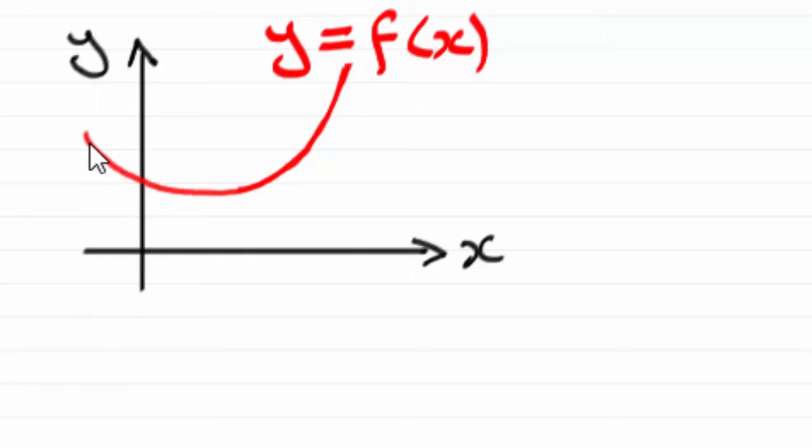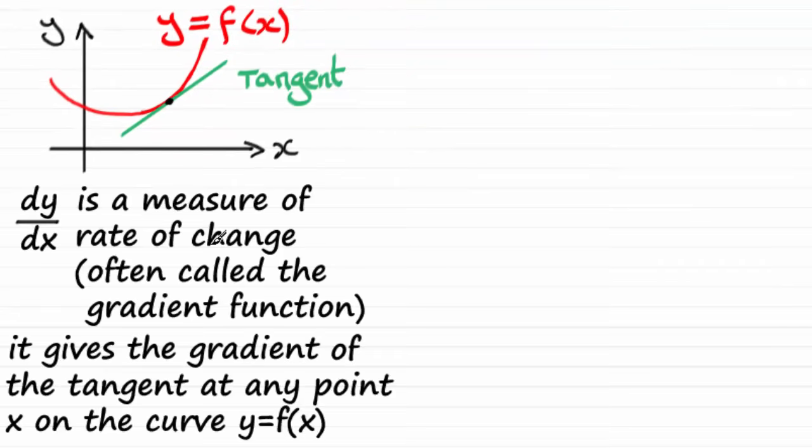Now suppose I have a graph, this is just part of a graph of y equals some function of x, and I'm assuming that you're familiar with tangents drawn to a curve. Here I've drawn a tangent at this point x on the curve and its steepness is positive. If I were to draw the tangent on this part of the curve it would have been going downwards and its gradient would have been negative. So that gradient is continually changing as we move around the curve and we can measure that gradient on a curve by something called dy by dx.